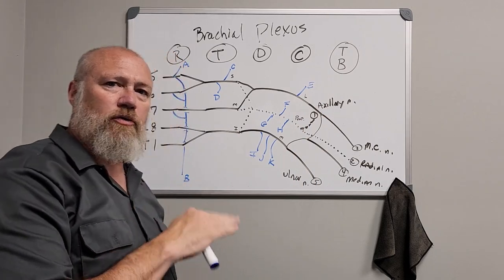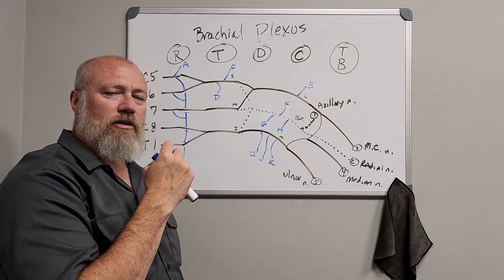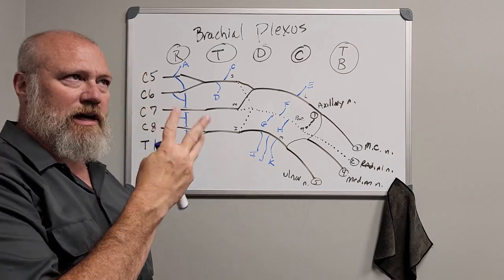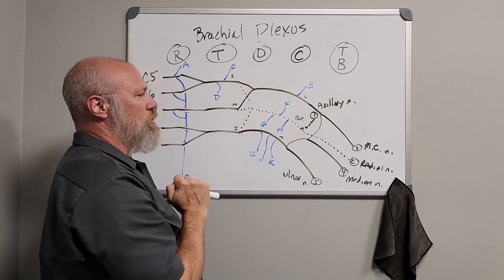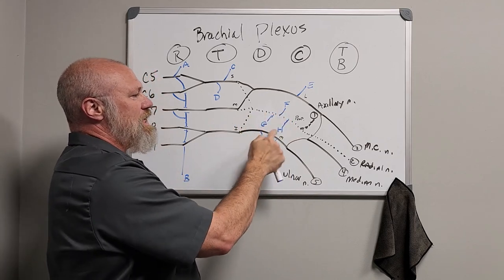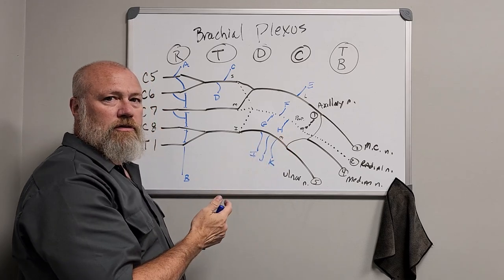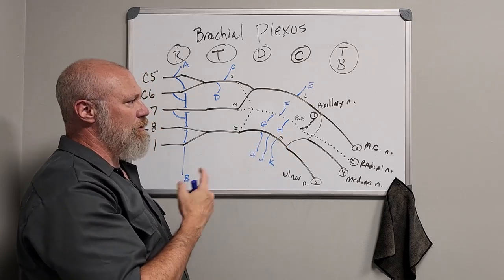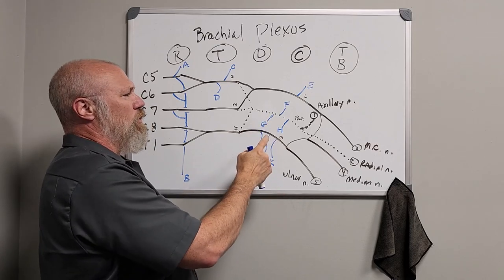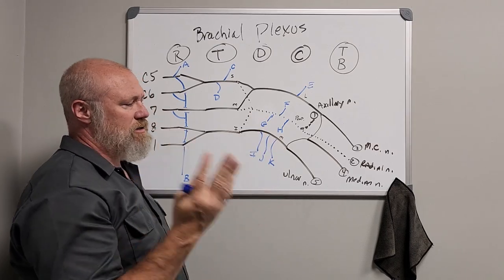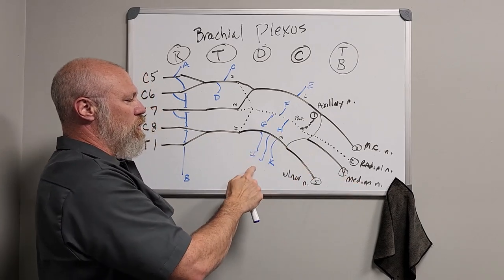Continuing in alphabetical order — E is lateral pectoral nerve. F is the thoracodorsal nerve, which runs with the thoracodorsal artery, one of the terminal branches of the subscapular artery off the third section of the axillary artery. G and H are the upper and lower subscapular nerves — it should logically have been medial and lateral or proximal and distal, but nobody consulted me, so it's upper and lower subscapular nerves.